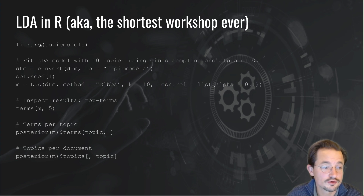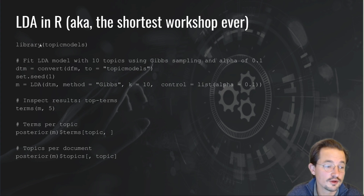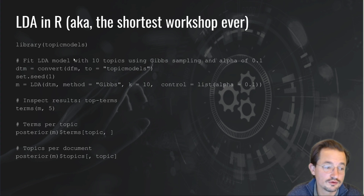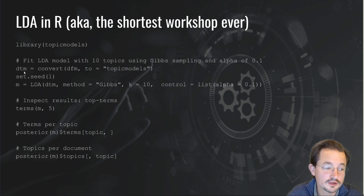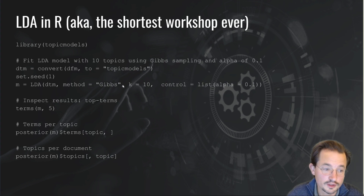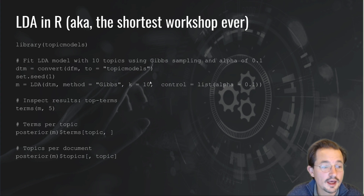If you use the library topicmodels and if you use quanteda to create a document feature matrix, there are only two real steps to fitting an LDA model. First, you need to convert the quanteda document feature matrix to a topicmodels document term matrix. Then you run the LDA function. You should always specify the number of topics, the K, and we suggest generally also specifying the method — Gibbs sampling.